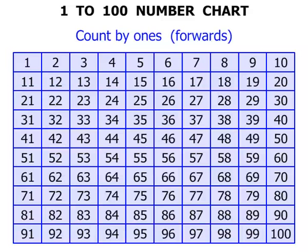So you'd be very familiar with that so far. What about if we started at, for example, 52? So 52, 53, 54, 55, 56, 57, 58, 59, 60, 61, 62. And again we could continue on with that.